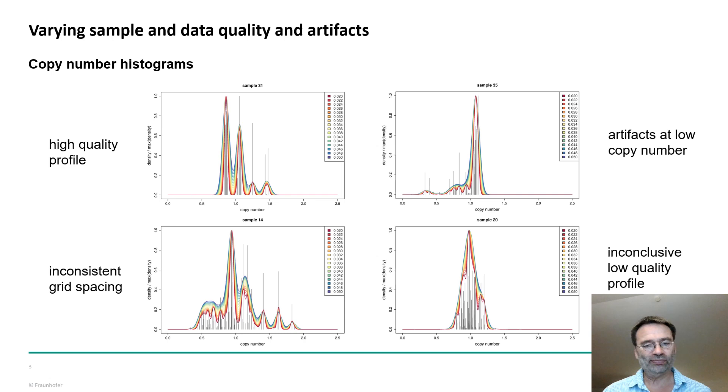So to show you the different quality of the data, the upper left image shows a very regular histogram of the copy numbers, and surely you could process those completely automatically with no problems. But often the data are different. Like on the lower left you see some inconsistent grid spacing. You have a rather clear grid spacing on the right side of the main peak, but not so on the left side. Or you have, like in the upper right, a long leftward tail to lower copy numbers. And the lower right shows a profile which is rather inconclusive because you don't see any clear grid spacing at all.